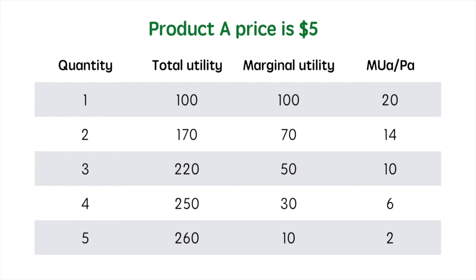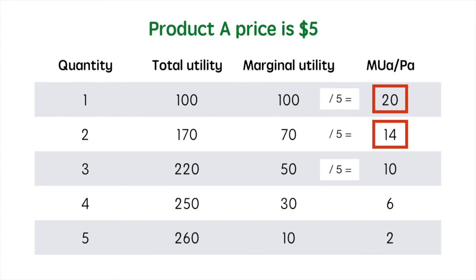The last step we need to do is calculate the value of the marginal utility per dollar for each level of consumption. For the first unit, our marginal utility is 100. Since the price is $5, our marginal utility per dollar is equal to 20. Essentially, $1 is worth 20 utils. We continue this calculation for the second unit, arriving at 14 utils per dollar. It's 10 utils per dollar for the 3rd, 6 for the 4th, and 2 for the 5th.